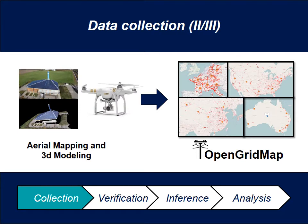We have also looked into other ways of collecting data, for example using hobby drones. This allows you to collect more accurate data and also do some 3D modeling, which enables measurements and getting more characteristics on power grid elements like photovoltaics. This data also flows into the platform.